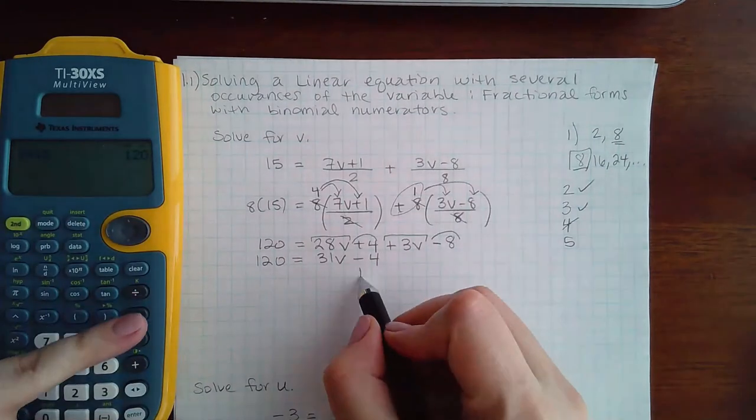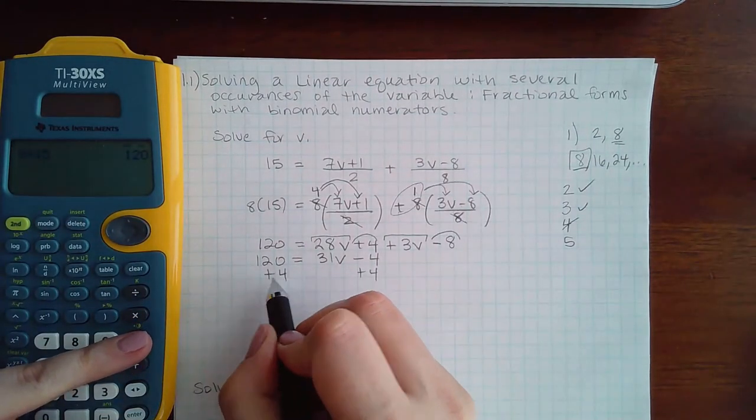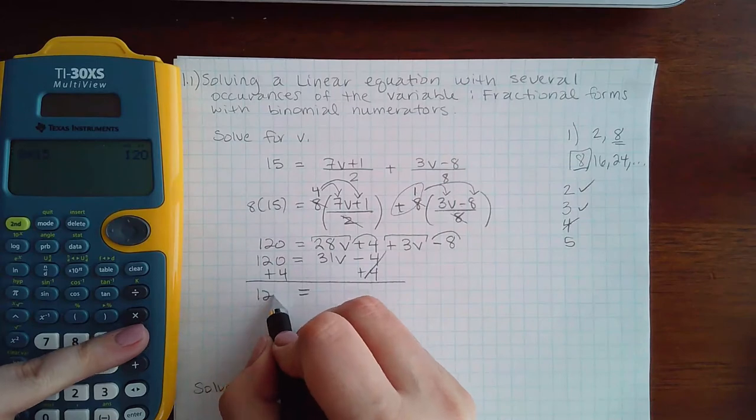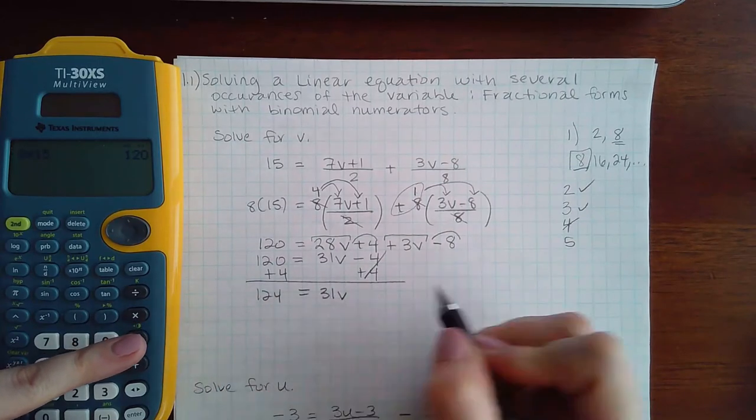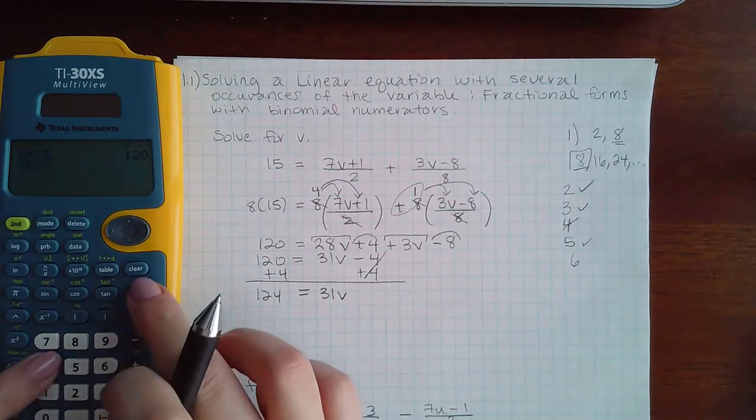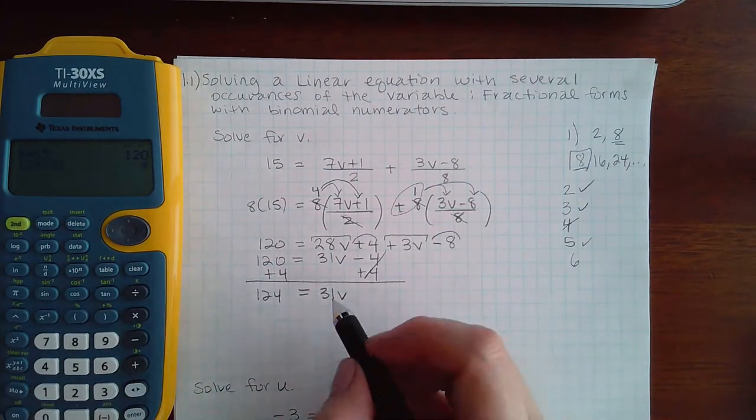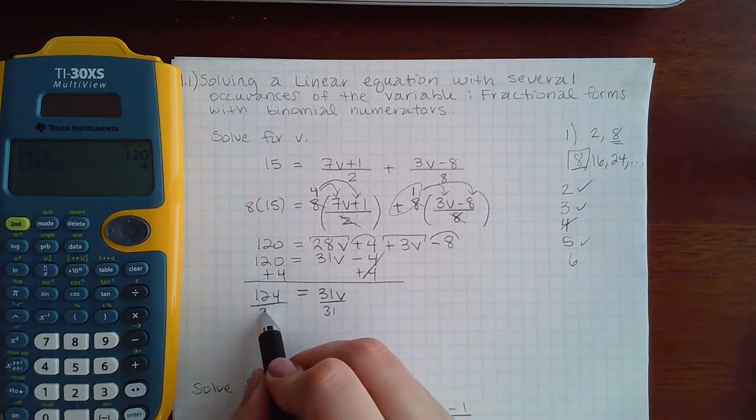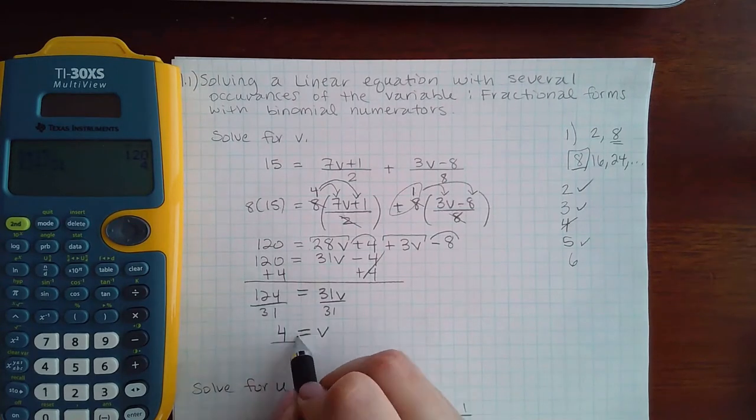And then the last step is to divide by our coefficient. And so I end up with 4 equal to V.